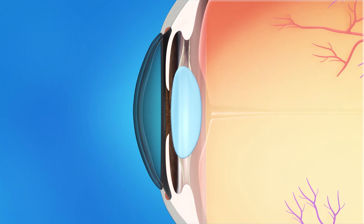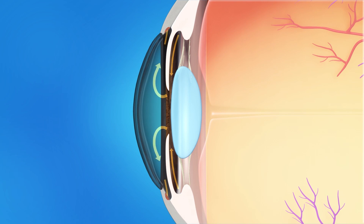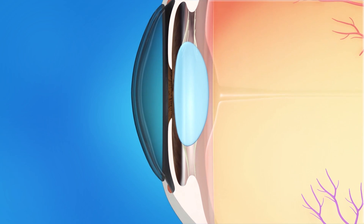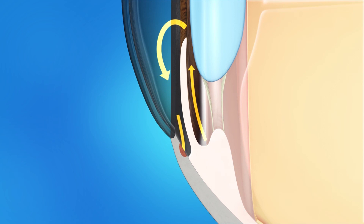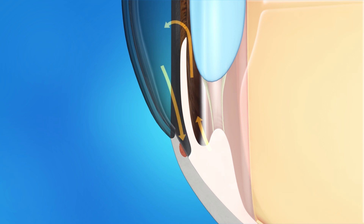In the healthy eye, fluid called aqueous humor is made in the front of the eye and flows out through a tiny drain called the trabecular meshwork. The trabecular meshwork is located in an area called the drainage angle.